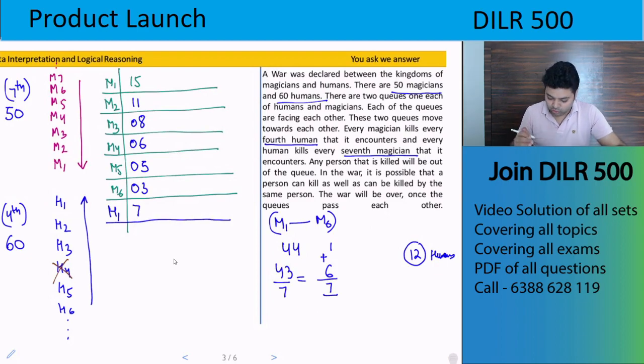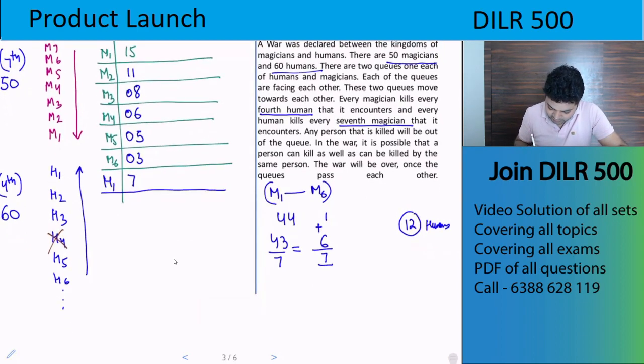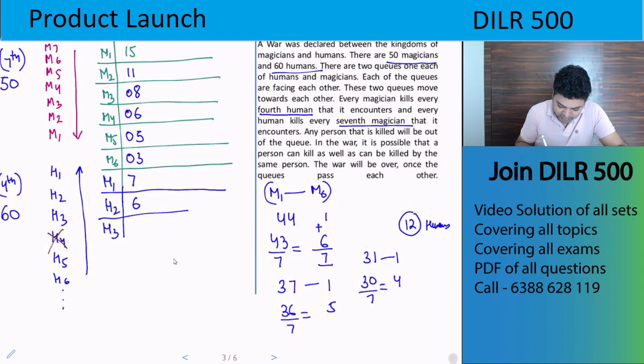Now how many magicians are left with us? So 44 minus 7, that is 37 magicians are left with us. H2 will go. H2 also, as soon as it goes, will see the first magician and kill it. After that 36 are left, divide by 7, 5 more, meaning it will kill 6 people in total. So 37 minus 6, now we have 31 magicians left. H3 will go. As soon as H3 goes, it will kill this one, 30 will be left, divide by 7, 7 goes into 28, meaning it will kill 5 magicians. And now how many magicians will be left with us? 31 minus 5, that is 26 magicians will be left with us.